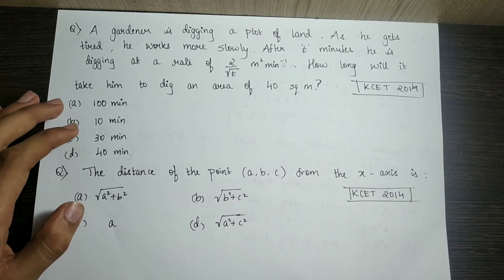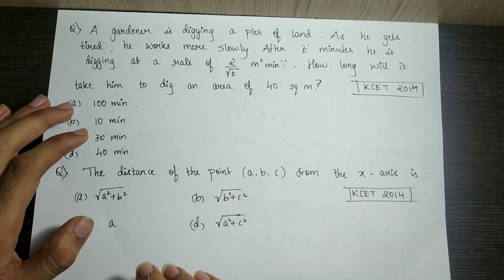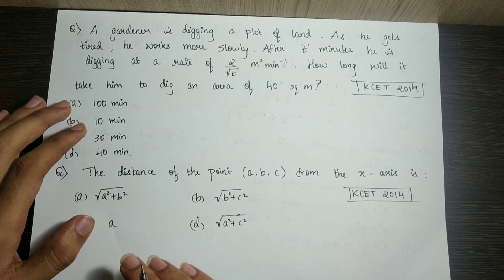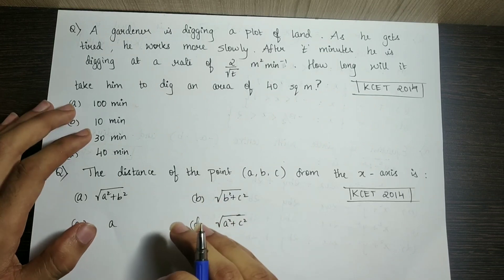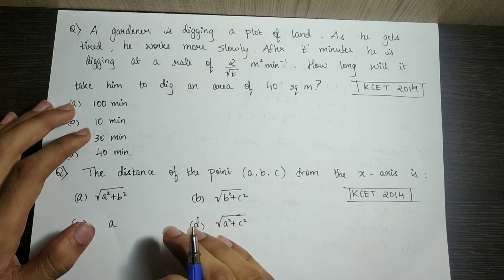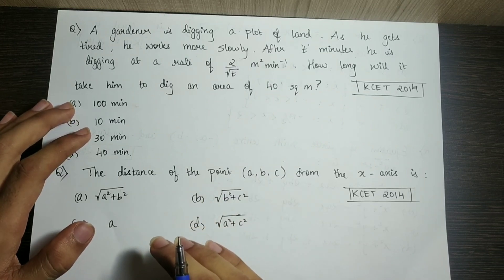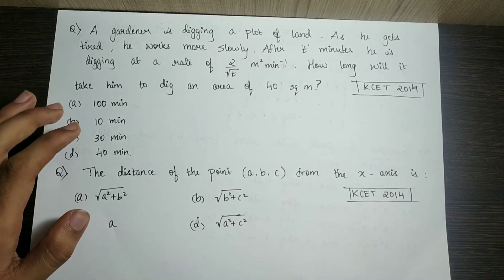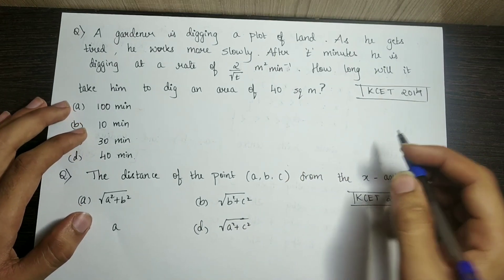The first question: A gardener is digging a plot of land. As he gets tired, he works more slowly. After 10 minutes, he's digging at a rate of 2 by root t square meters per minute. How long will it take him to dig an area of 40 square meters?